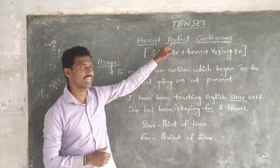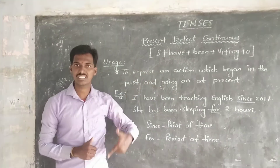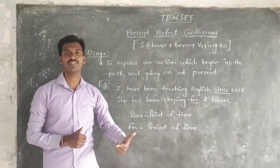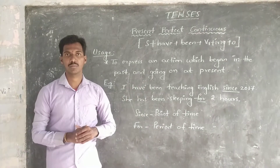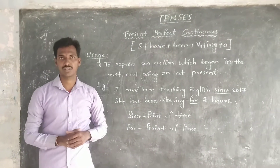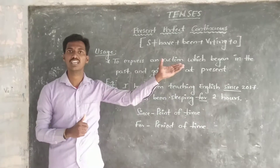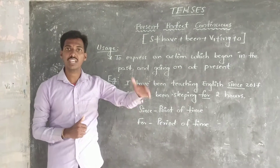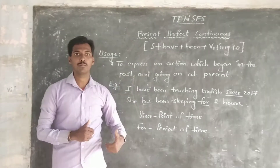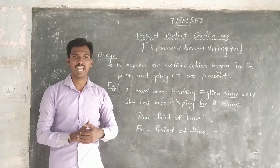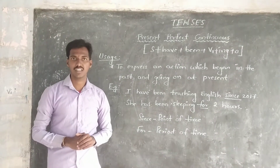It is going on, but started in the past. If you want to talk about actions which began in the past and are continuing at present, you have to use Present Perfect Continuous.